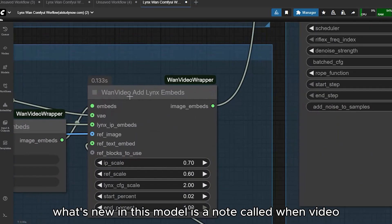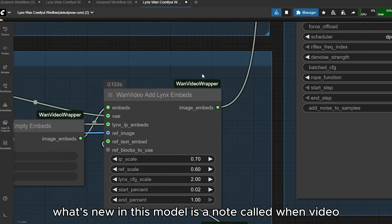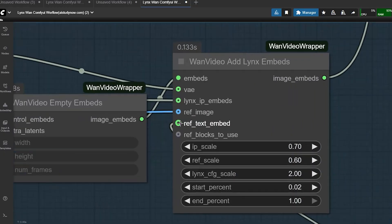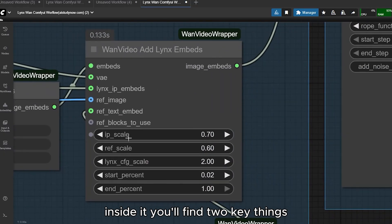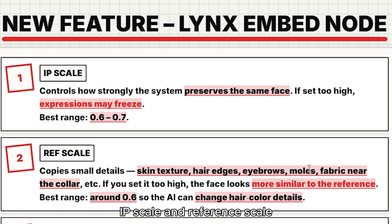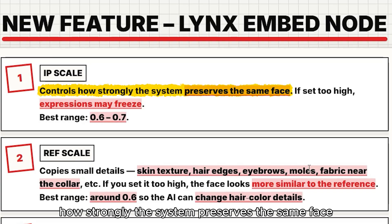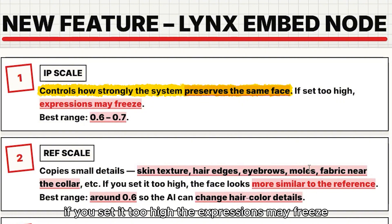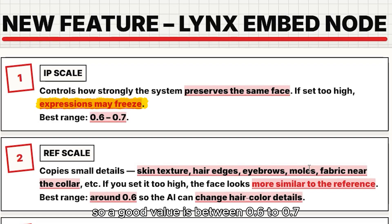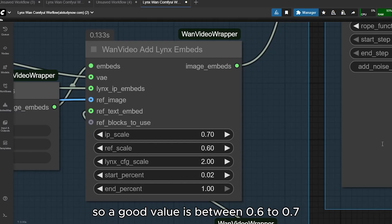What's new in this workflow is a node called Wan Video Add LINKs Embed. Inside it you'll find two key settings: IP scale and reference scale. IP scale controls how strongly the system preserves the same face — if you set it too high the expressions may freeze, so a good value is between 0.6 to 0.7.